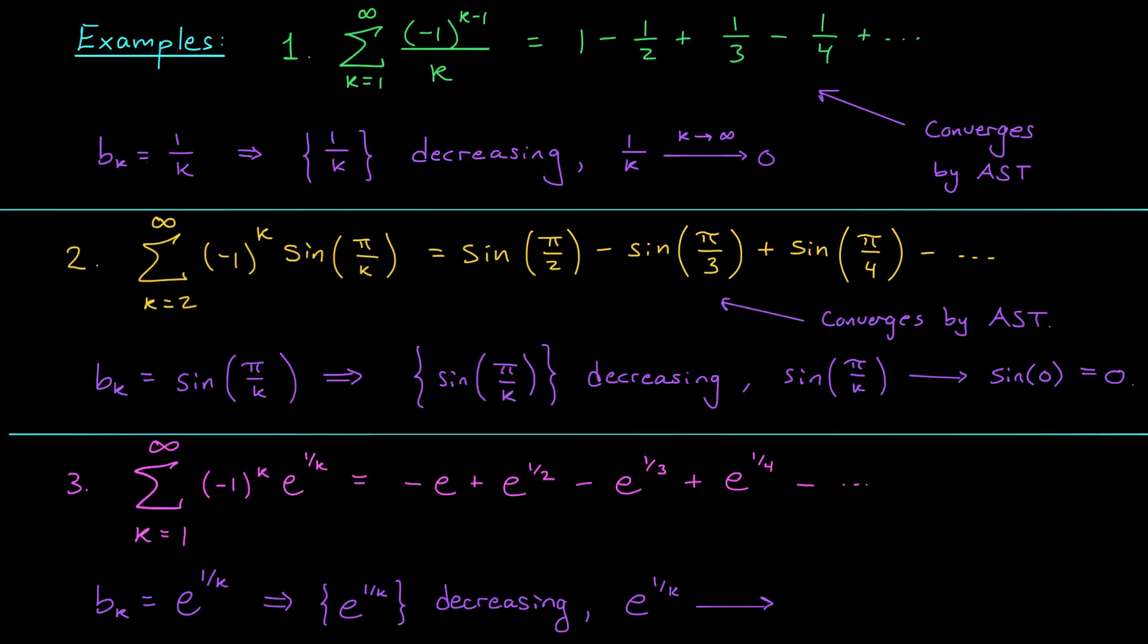As I let k go off to infinity, my terms approach e to the zero, which is 1. Ah, so my alternating series test doesn't apply, but my test for divergence sure does. According to this test, since the terms of the series don't go to zero, the series itself is divergent.